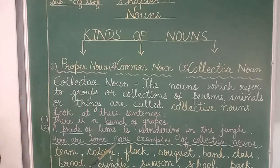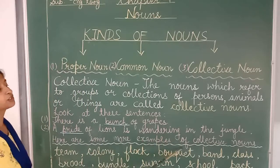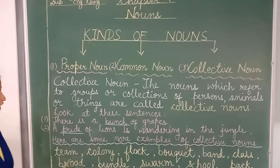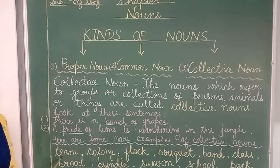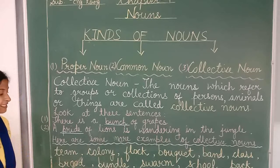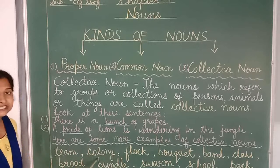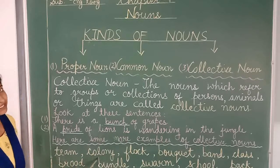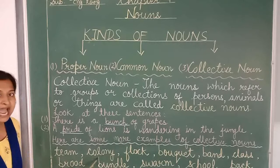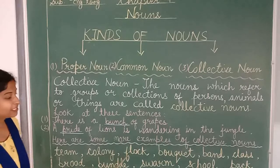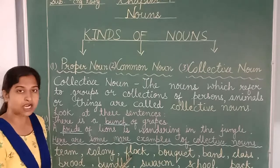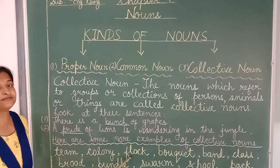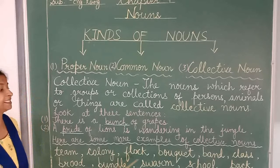Here are some more examples of collective nouns. Team — team is a group of players. Colony — colony is a group of ants. Flock — flock is a group of birds.